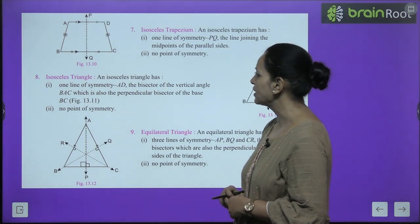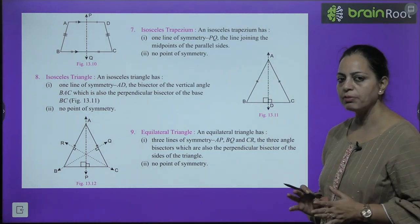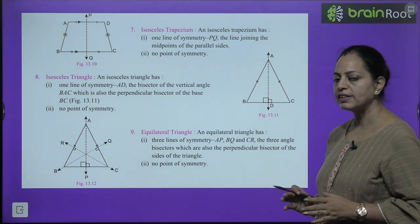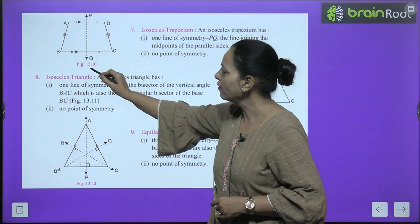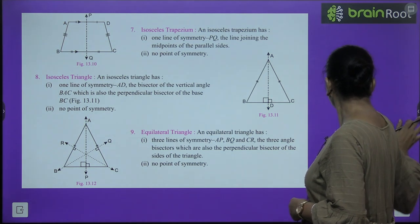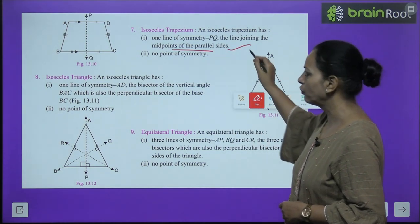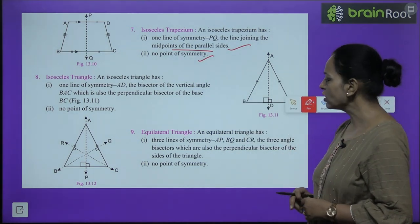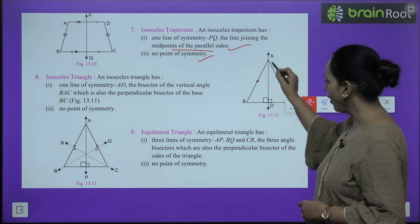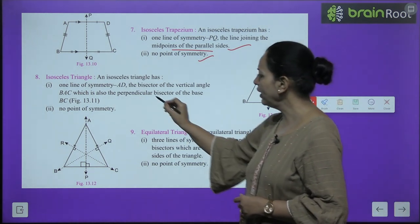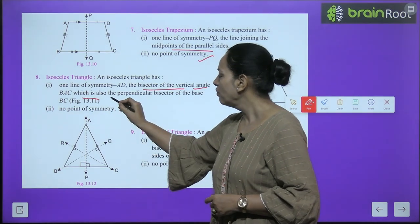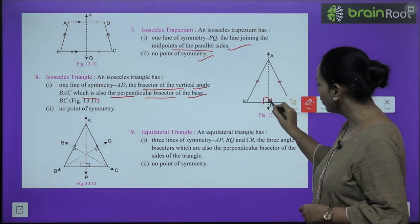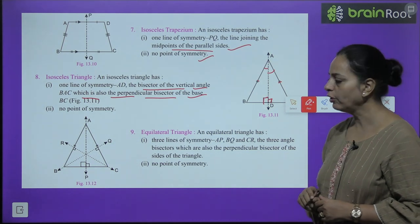Now the isosceles trapezium. A trapezium has one pair of parallel sides. In an isosceles trapezium, the non-parallel sides are equal. It has one line of symmetry, PQ — the line joining the midpoints of the parallel sides. There is no point of symmetry.